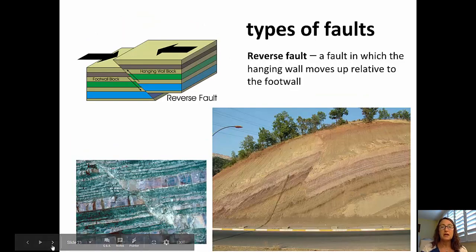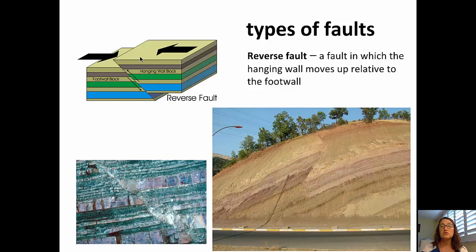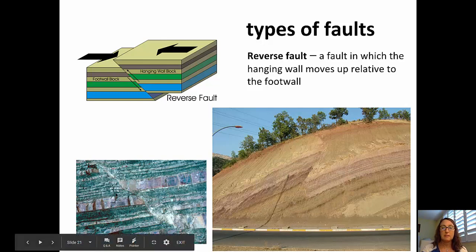Moving on to a reverse fault: in the cartoon in the top left corner, the hanging wall moves upward relative to the foot wall block. A reverse fault often forms in a compressional environment. In the bottom left corner, you can see an index bed that has moved up — here is the hanging wall moving up relative to the foot wall. The bottom right picture also shows offset of beds with the hanging wall moving up and over the foot wall.